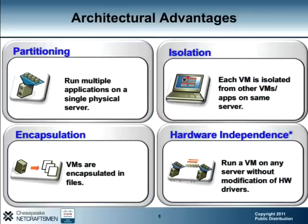There are four key advantages to the virtualized environment. First, a hypervisor allows for logical partitioning of virtual machines, allowing multiple applications to run on a single physical server. This also allows for isolation — each VM is isolated from other VM applications on the same server, so an issue with one virtual machine should not cascade to others. Virtual machines are also very mobile, since they are encapsulated into files which can easily be moved around your environment for business continuity and staging. Finally, the physical server and compute resources are technically transparent to the virtual machine, via an abstraction layer provided by the hypervisor, meaning a VM can be moved to another physical server without modifying hardware drivers.